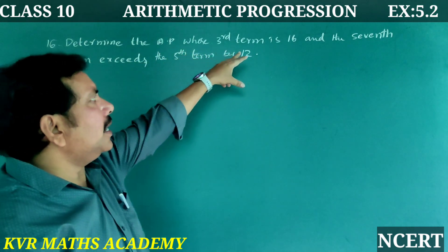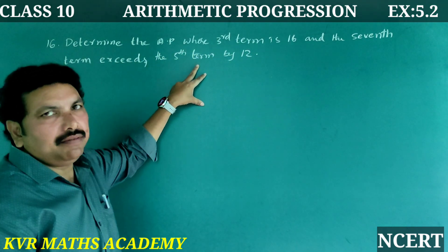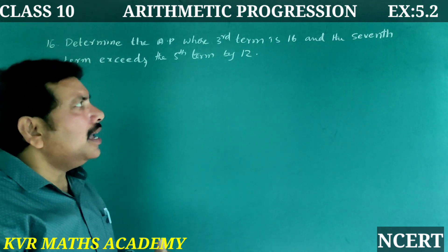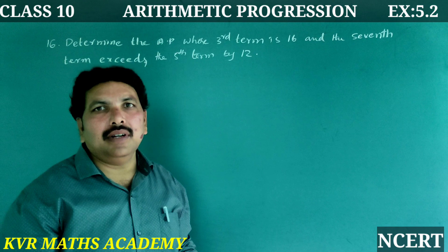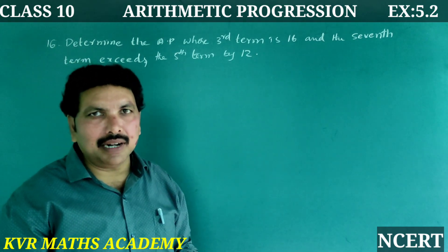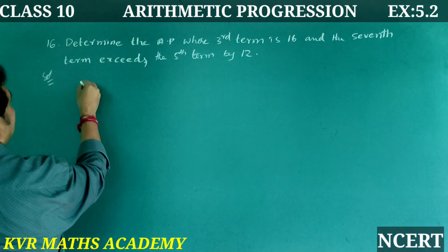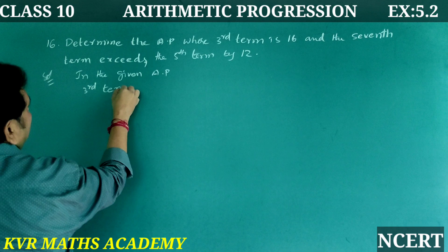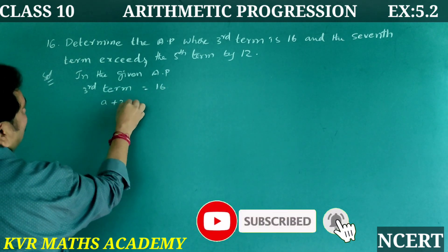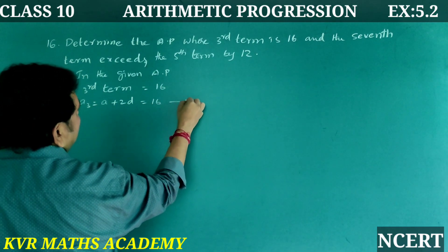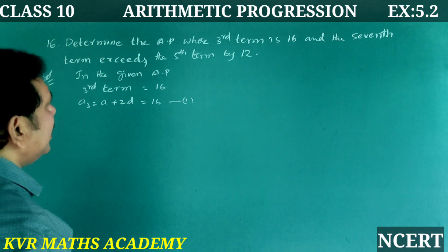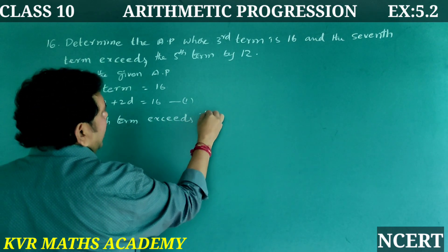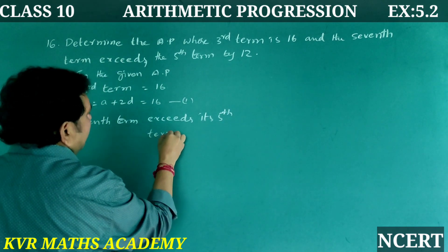Next, the 16th problem: Determine the AP whose third term is 16 and whose seventh term exceeds its fifth term by 12. So we need to find the AP given these two conditions.